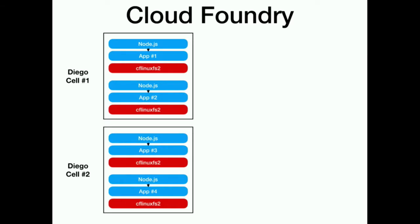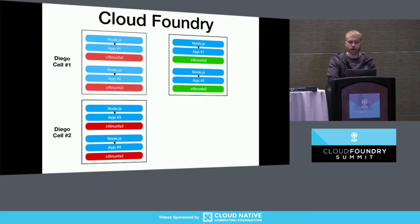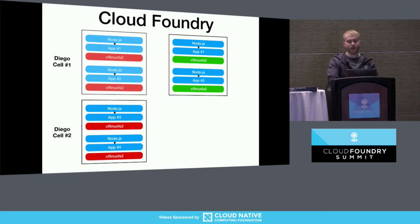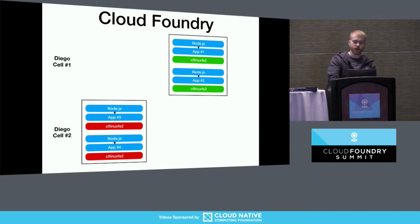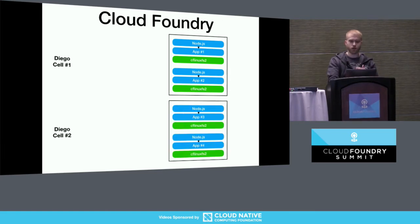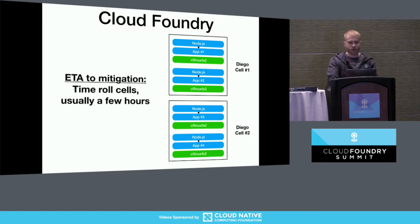When you do a BOSH deploy of Cloud Foundry, we go cell by cell and start new cells with a new rootFS, so each application starts with new OS level dependencies while the previous version is still running. This happens live in production — new applications come up on new cells with the new rootFS, we take the old cells down, and we do this cell by cell until the whole platform has been patched. This process usually takes a few hours — really fast compared to having lots of pipelines rebuild all your Docker images every time a CVE comes out.